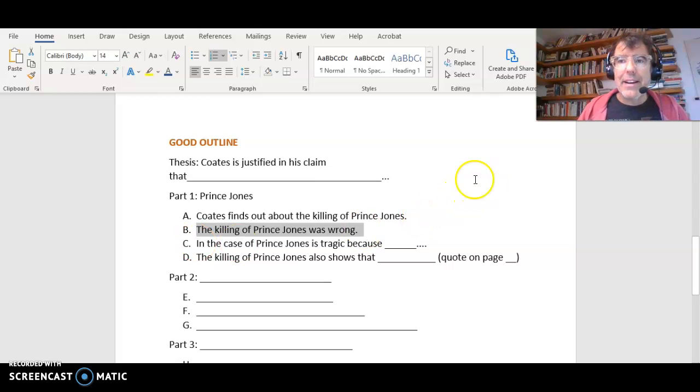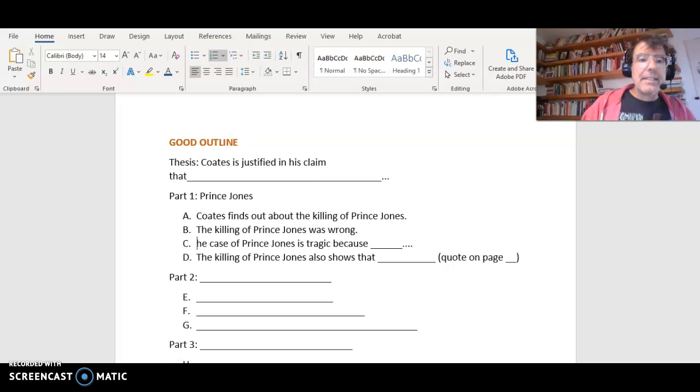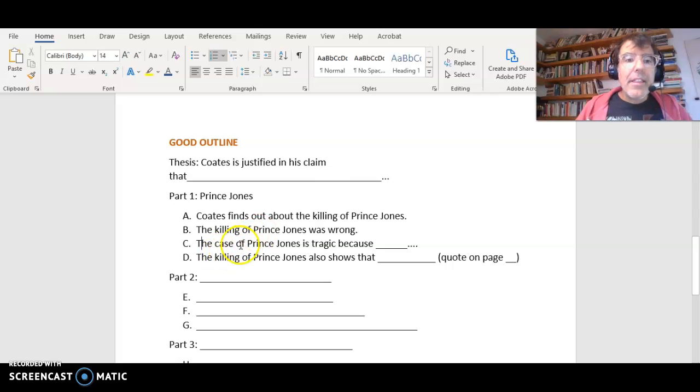But then you might have more to say, and Coates does have more to say. So you might have a third paragraph about Prince Jones. 'The case of Prince Jones is tragic because...' - I have a typo here. I'm always fixing things, right? Fix things as you go. For that one, you might just have one quote. One of those juicy Ta-Nehisi Coates quotes - one quote that shows how terrible it was. So you might have a whole paragraph just for one quote.